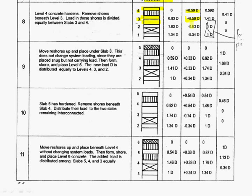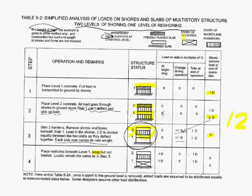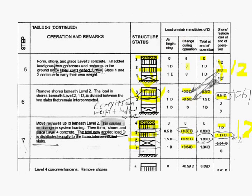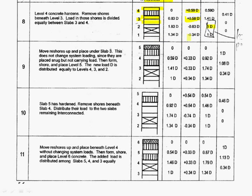1.170D divided by 2 gives 0.590 and 0.580. Also, intuitively, now there is no load above the second floor slab, so the second floor slab only needs to carry its own weight — 1D. The same thing happens to the first floor slab, which is also 1D.